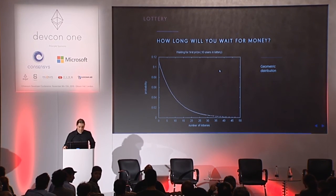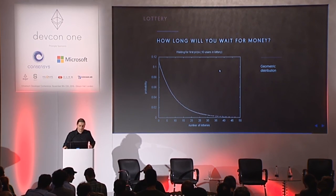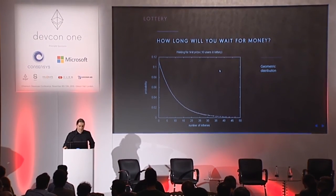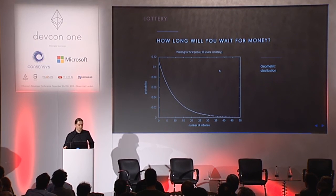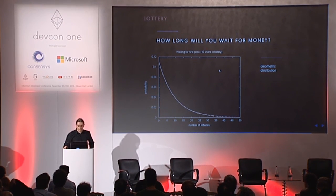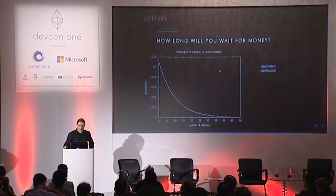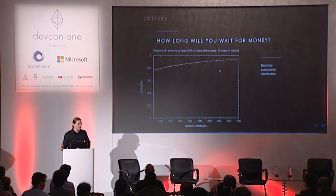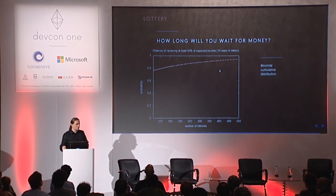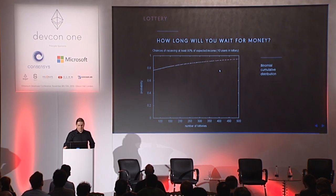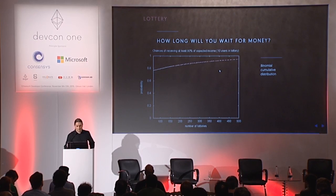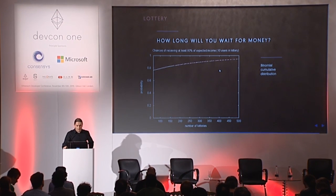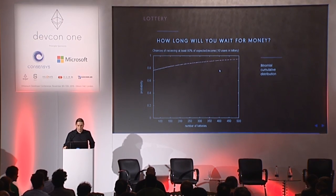What might be interesting for a user taking part in a probabilistic setting is how long they would have to wait for the first payment. The probability of not getting a payment during the first N lotteries drops to zero pretty quickly, meaning the probability of getting a payment rises to 1 quickly. Using a simplified approach with the binomial cumulative distribution, we can also show that the chance of achieving some predefined amount of expected income after a number of lotteries grows to 1 in a convincing way, which should encourage users to take part in lotteries.